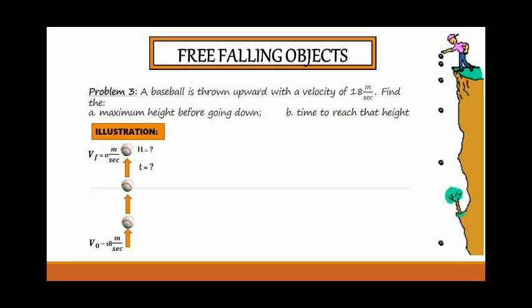Problem number three: a baseball is thrown upward with a velocity of 18 meters per second. Find the maximum height before going down and the time to reach that height.